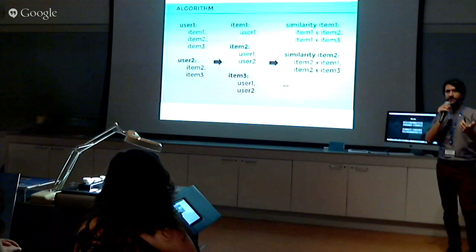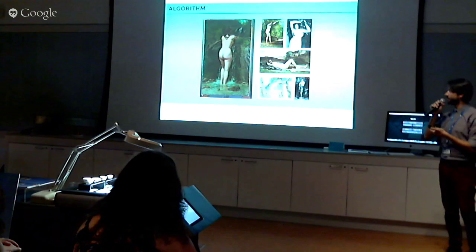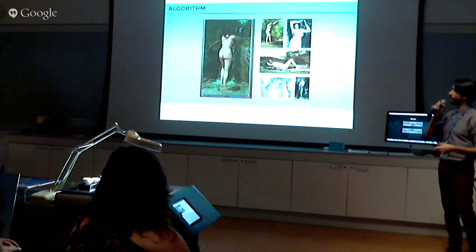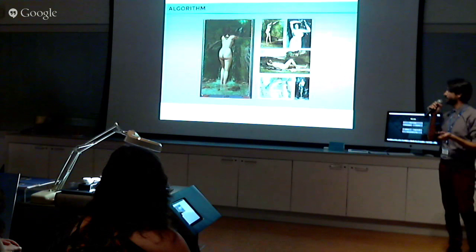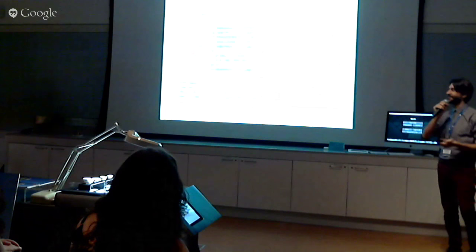We're not interested in the metadata — we're not interested in what department the artworks are from. This is only based on the user's interests. The result is something like this: based on that first item, we have some similar items. They might be similar because they're from the same artist, or from the same search result when people search for 'female nude painting' — we cannot tell. The data shows a list of correlated items from zero to one — that's like the correlation index.